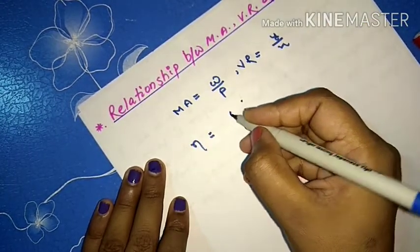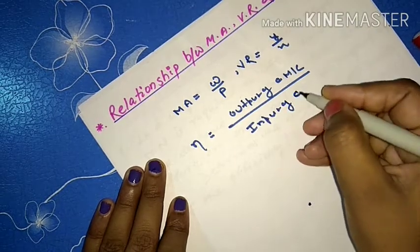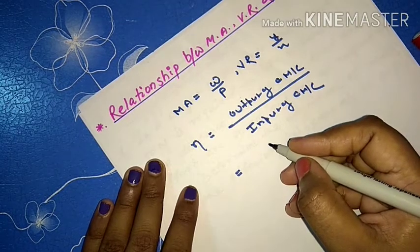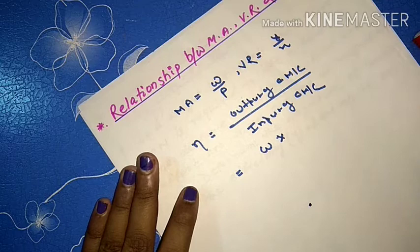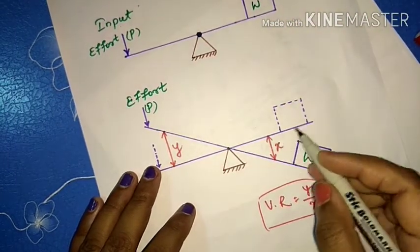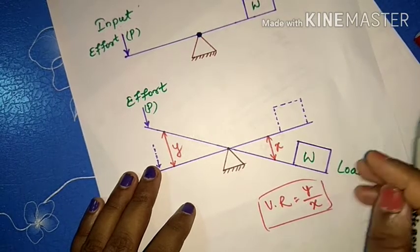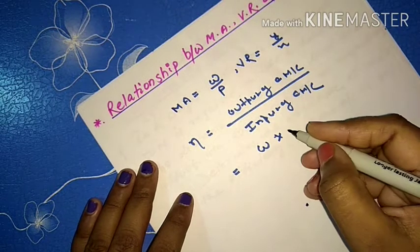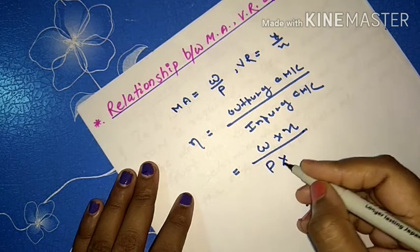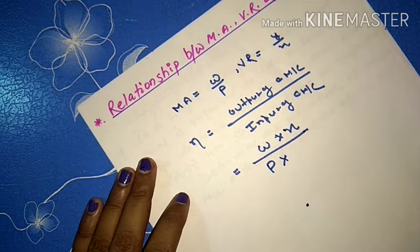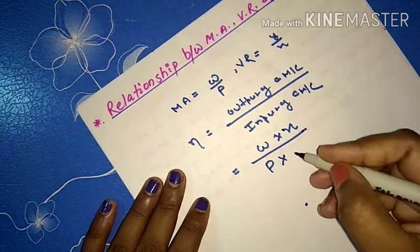So efficiency is derived as: output of a machine divided by input of a machine. Output of a machine equals load lifted multiplied by the distance through which the load has been lifted — that is, W × x. Input of a machine equals effort applied multiplied by the distance through which the effort has moved — that is, P × y. So efficiency equals (W × x) divided by (P × y).